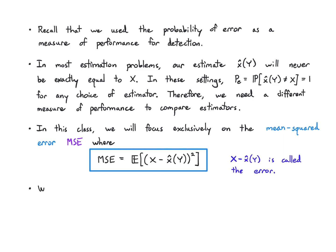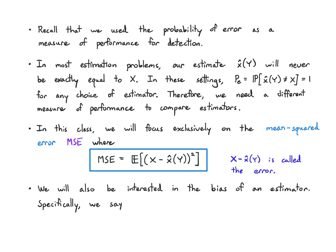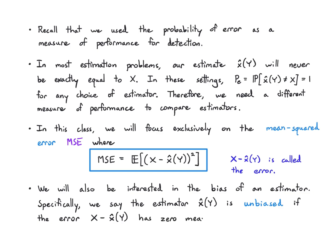x minus x̂(y) is the error — the difference between the true value and your prediction. We'll also be interested in what we call bias, in a Bayesian sense. An estimator is unbiased if the error x − x̂(y) has zero mean. There are stronger notions of unbiasedness in statistics; this Bayesian notion uses the prior distributions to average, which is just a subtle distinction.